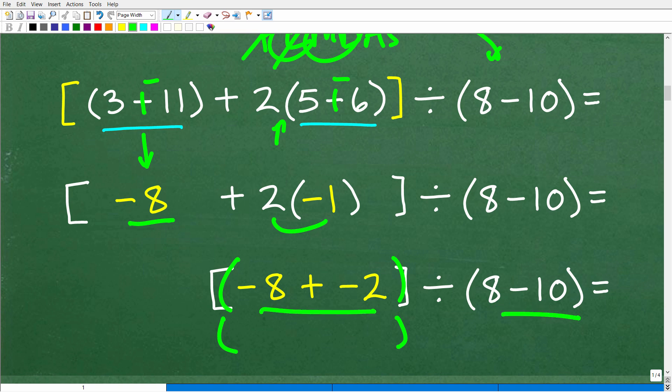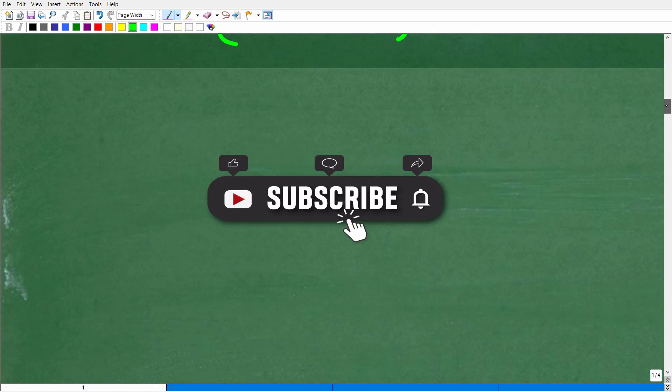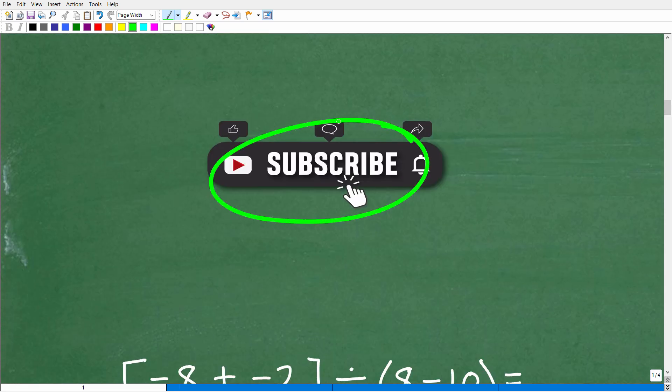We have these brackets, and these are the same thing as parentheses. We have brackets or parentheses, negative 8 plus negative 2 divided by 8 minus 10. We're going to work on these two things first, and then we'll do the division last. Let's take the next step, which of course is having you quickly subscribe to my YouTube channel. I definitely need your support to continue to grow my channel.